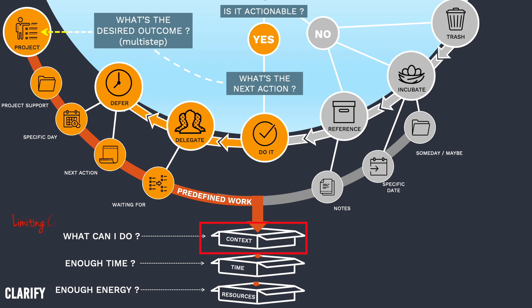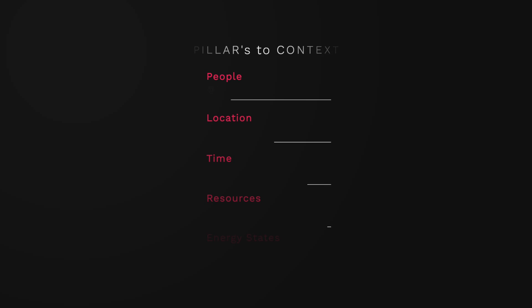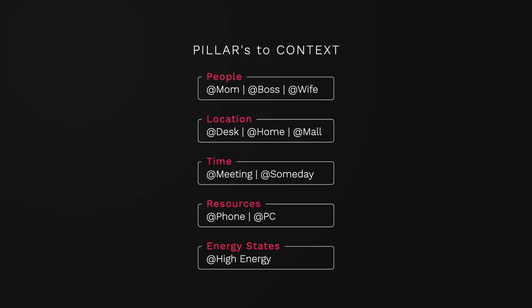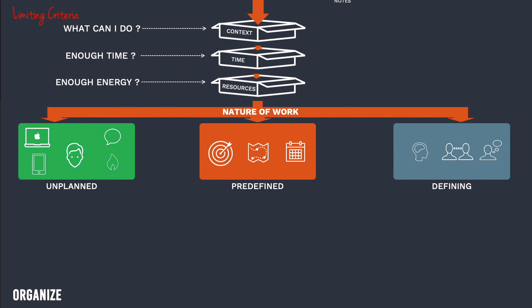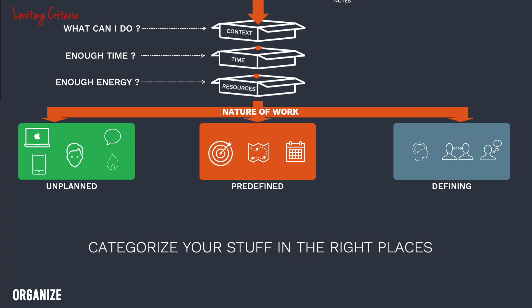This is exactly where context comes in, but context is much deeper than that — it lays foundations to five pillars: people, location, time, resources, and your energy states. You also need to distinguish between planned and unplanned work so that you can stick to your schedule as much as possible. To do all of this, you need to arrive at prioritization.